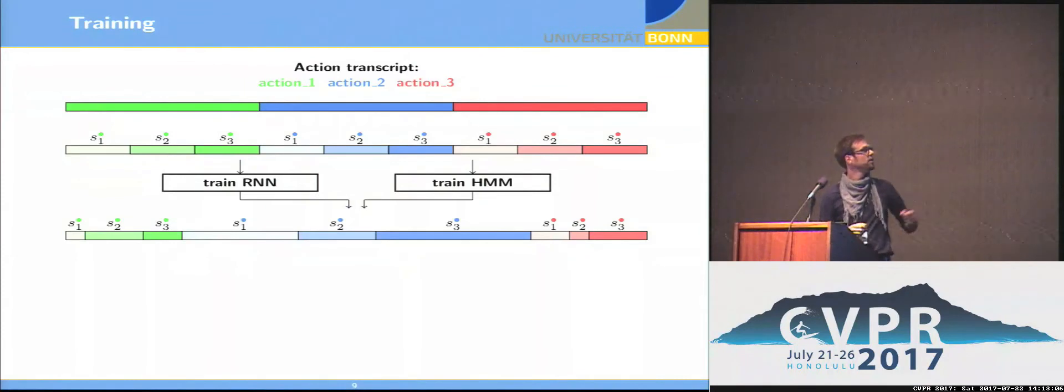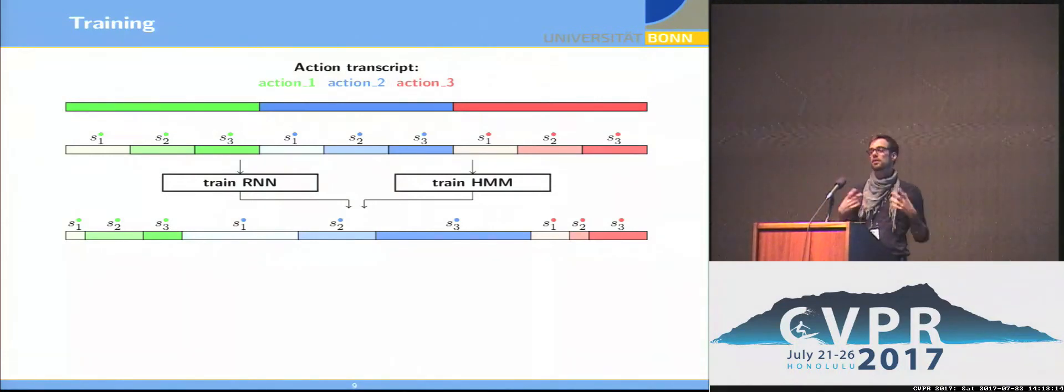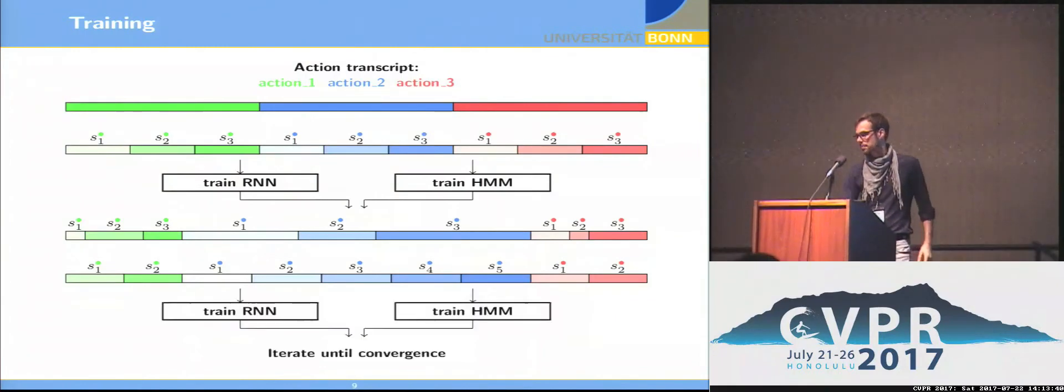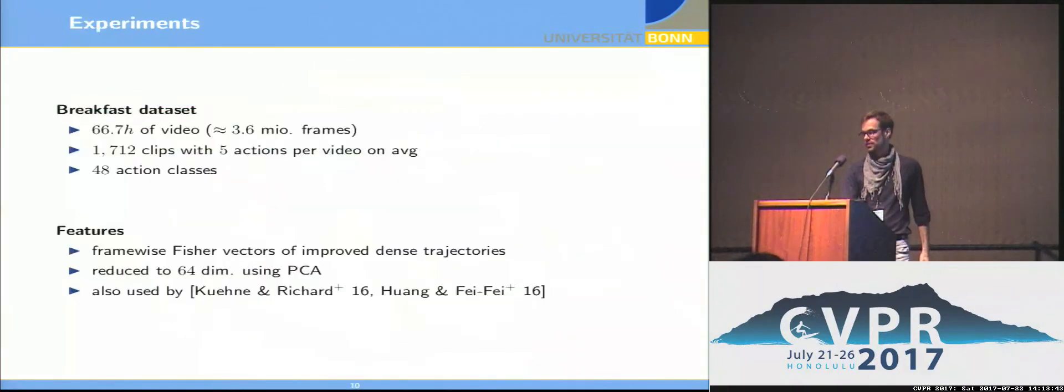This may look, for example, like this. One could now say we take this one and iterate the training until it converges, but maybe you already see that there is a problem. The blue class in the middle got very long, leading to the fact that also the sub-actions got very long, so we are again in this problem that we have very many frames within one sub-action and the RNN will struggle to actually solve this problem. So what we do is redistribute these action frames so that on average each sub-action has the same number of frames. And this should help the RNN because the RNN can now really focus on its comfort zone of a small local temporal context. We iterate this until it converges and then our system is trained.